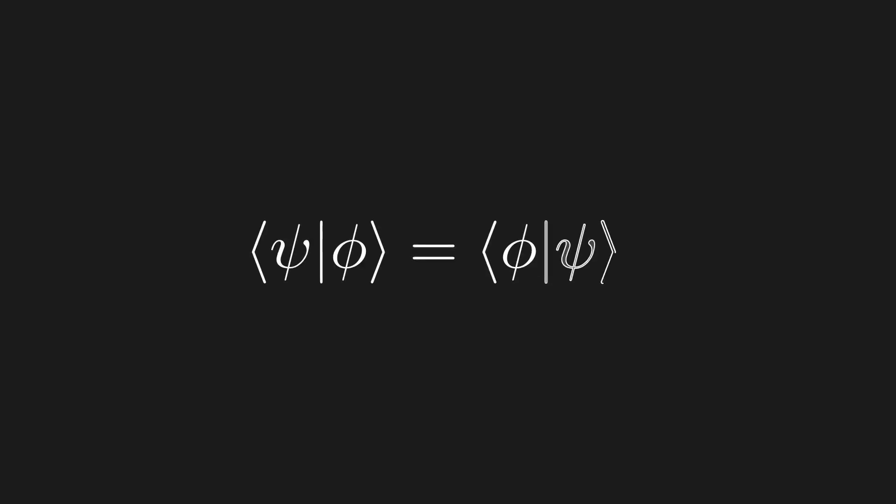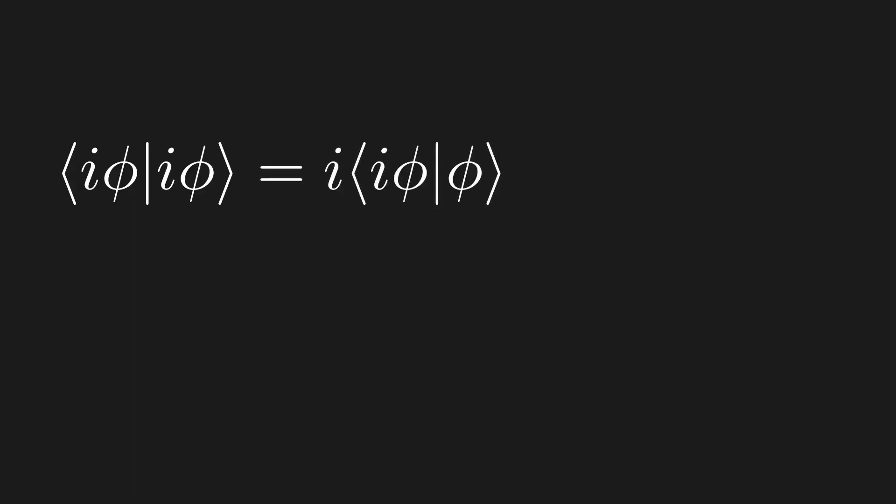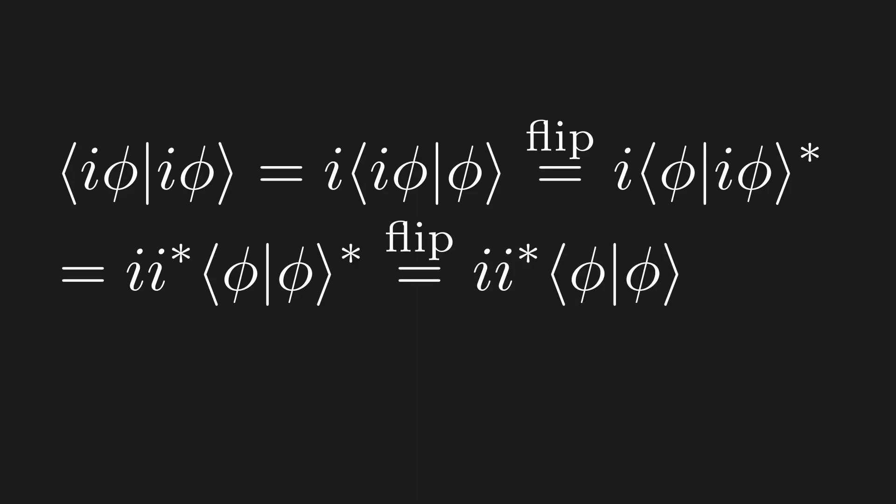The way we fix this issue is by adding the condition that when we flip the inner product, we must add a complex conjugate. If we go back into our previous example and add this condition, we now get the following. Take a second to follow each step. See how the complex conjugate gave us a 1 in the end, and hence a real vector length?